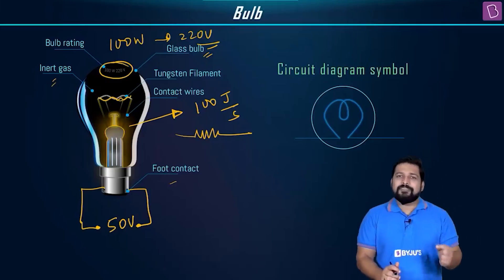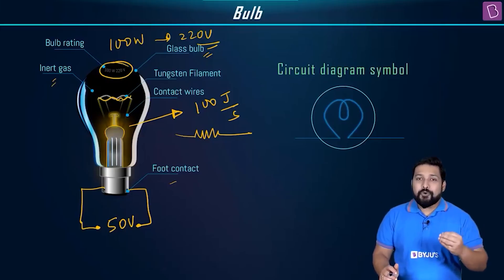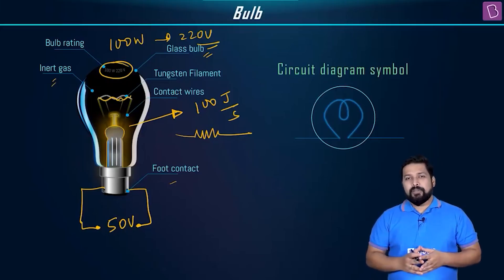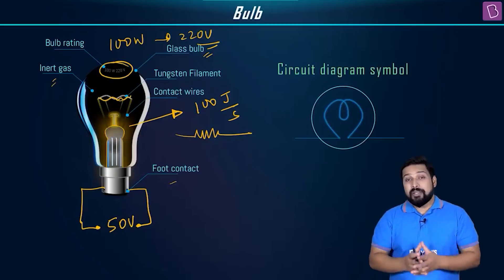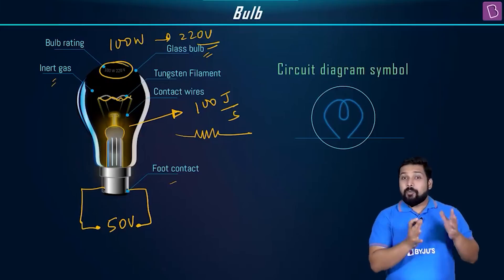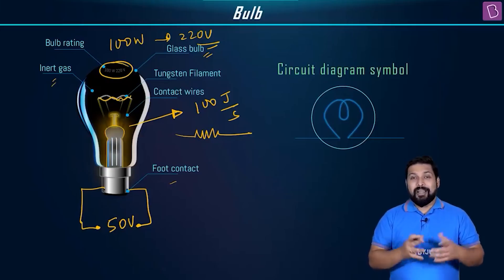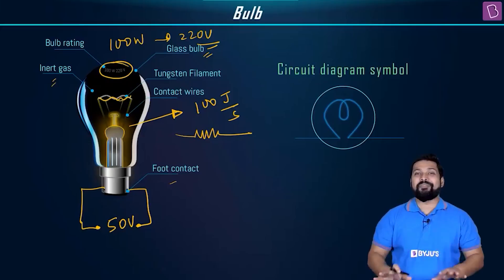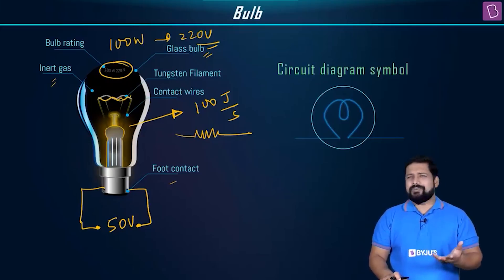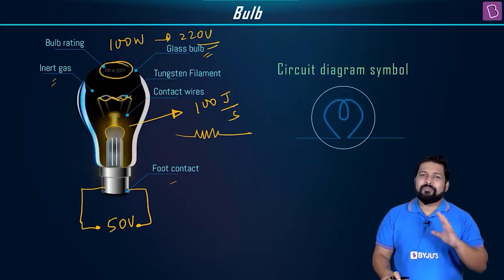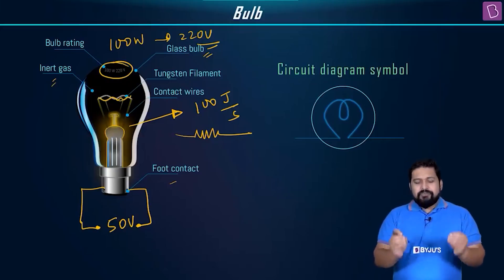This bulb is supposed to dissipate 100 joules of energy — most of it in the form of heat and some in the form of light. The conversion ratio is roughly 95% heat and 5% light. So any resistance mostly dissipates energy in the form of heat.